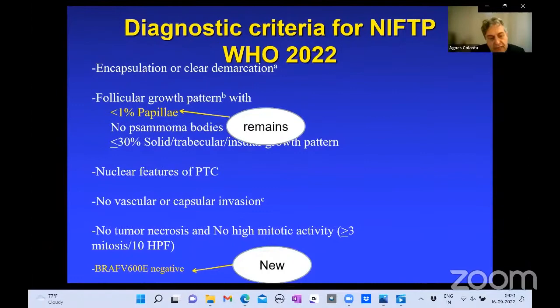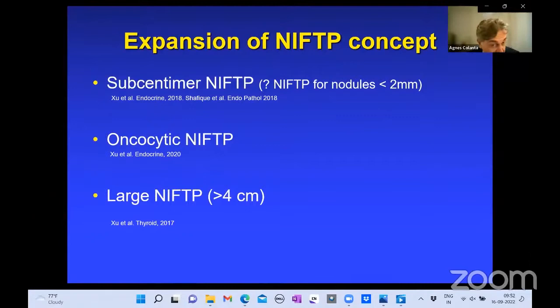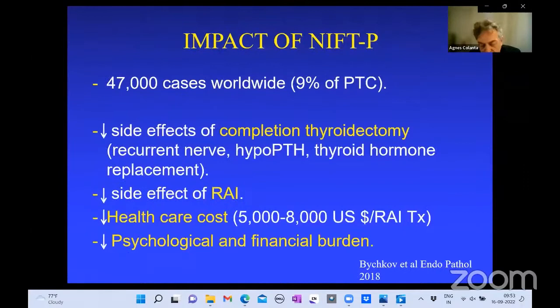So the new NIFTP criteria maintain less than 1% papillae but require BRAF V600E negativity. We also expanded the NIFTP concept: sub-centimeter NIFTP can now be diagnosed; NIFTP with oncocytic features can be diagnosed — we showed these also do not recur; and NIFTP larger than 4 centimeters can also be diagnosed, although in that situation I strongly advise submitting the entire capsule. In any NIFTP, the entire capsule must be submitted.